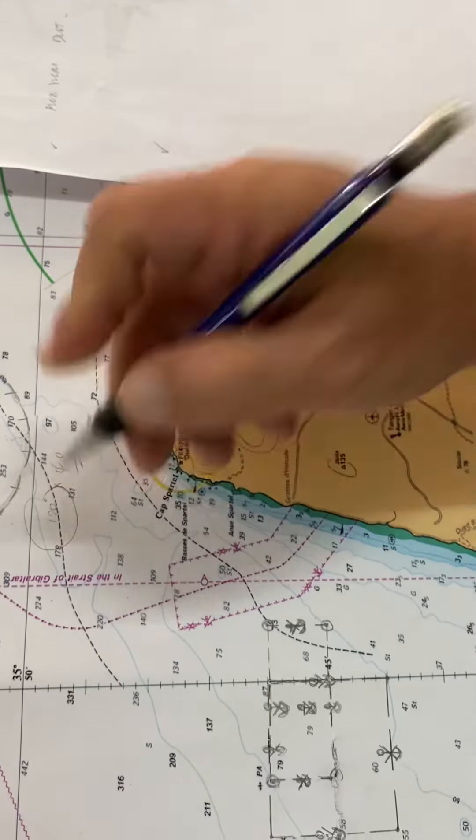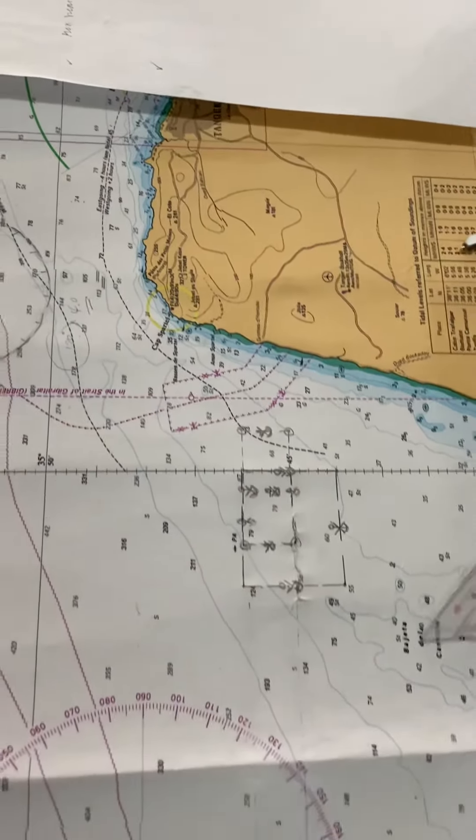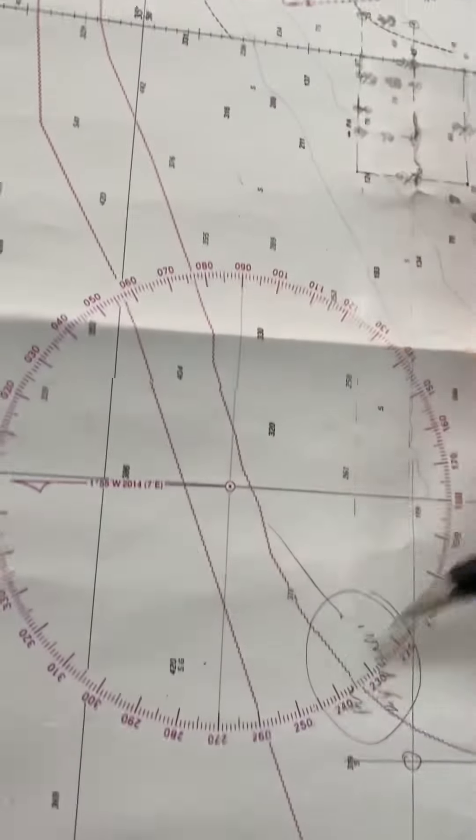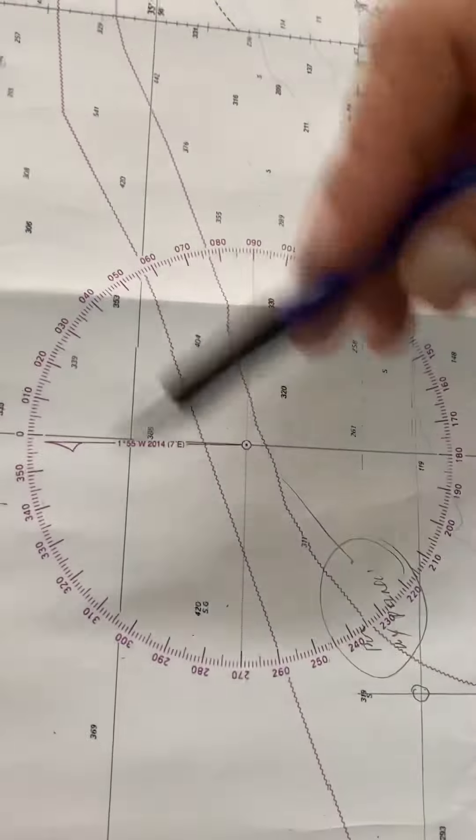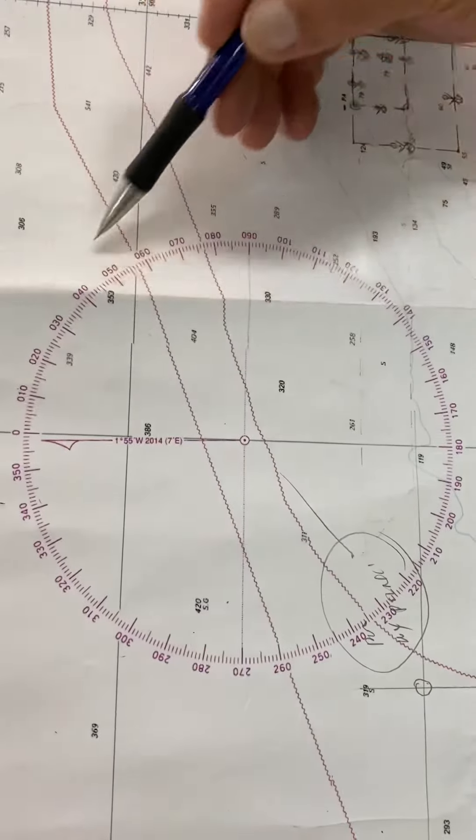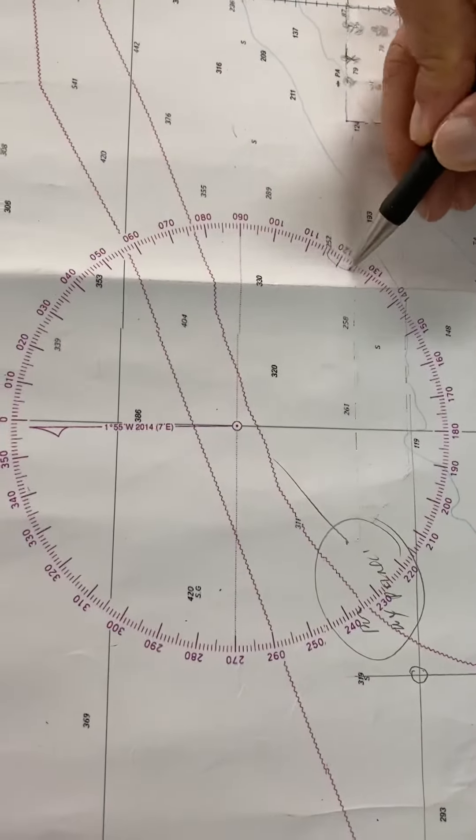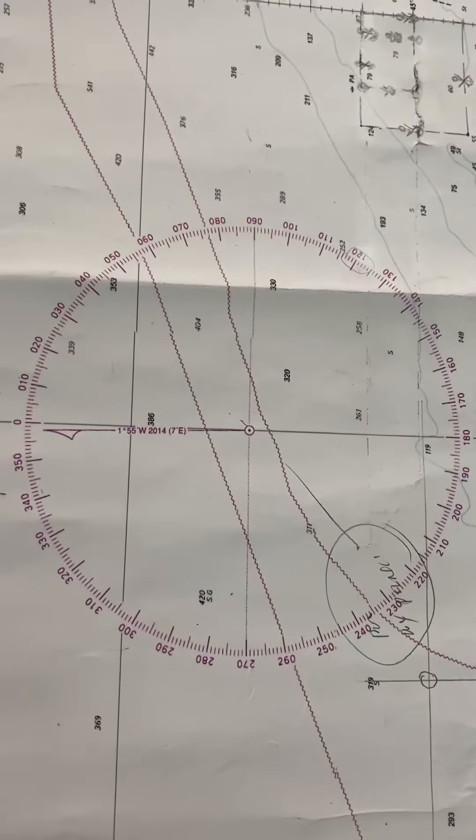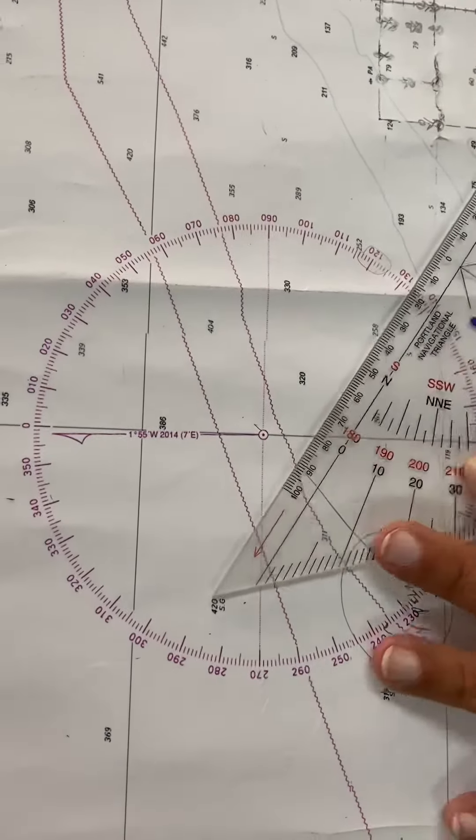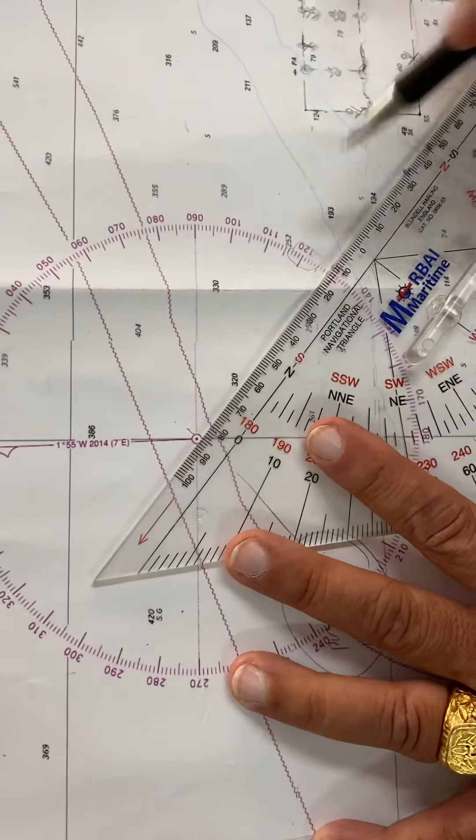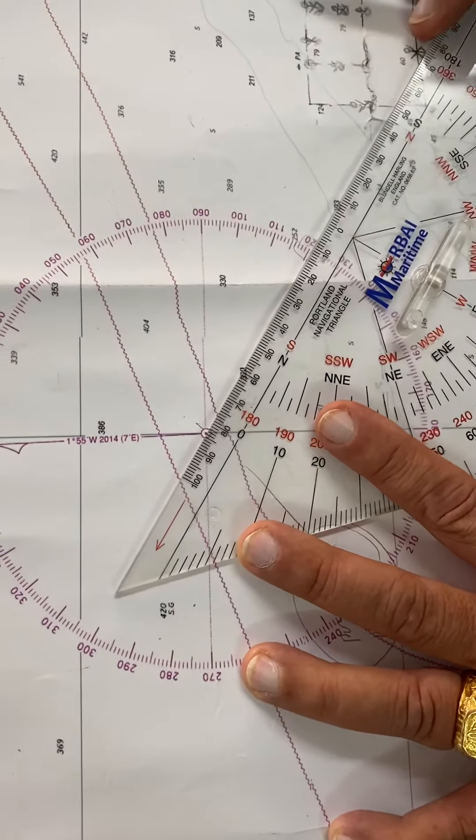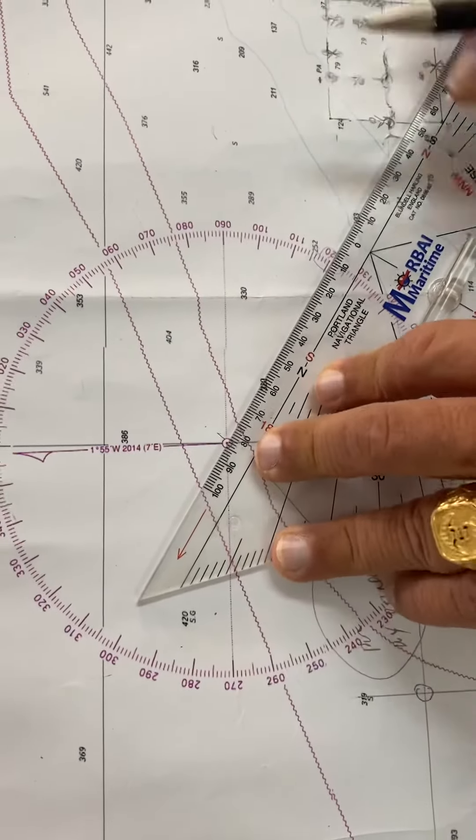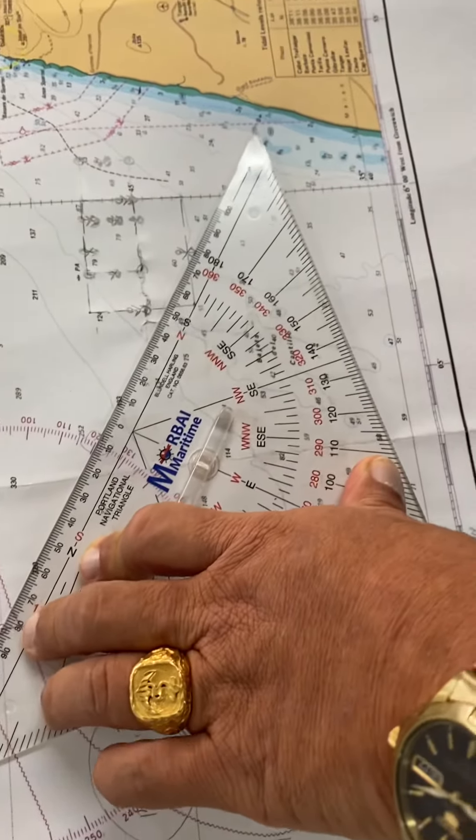You can see the compass rose. From the compass rose you need to find 120 degrees. This is 120 degrees and this is the center of the compass. You have to align the center of the compass at 120 degrees, then use another triangle and slide.